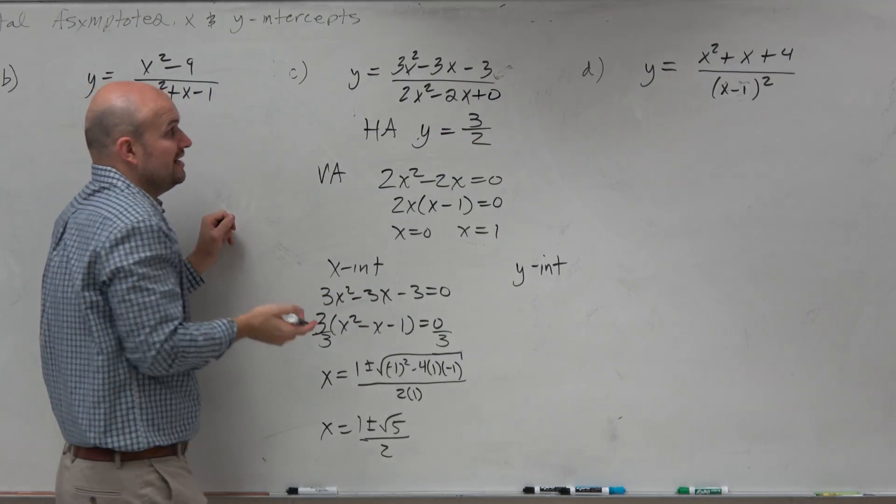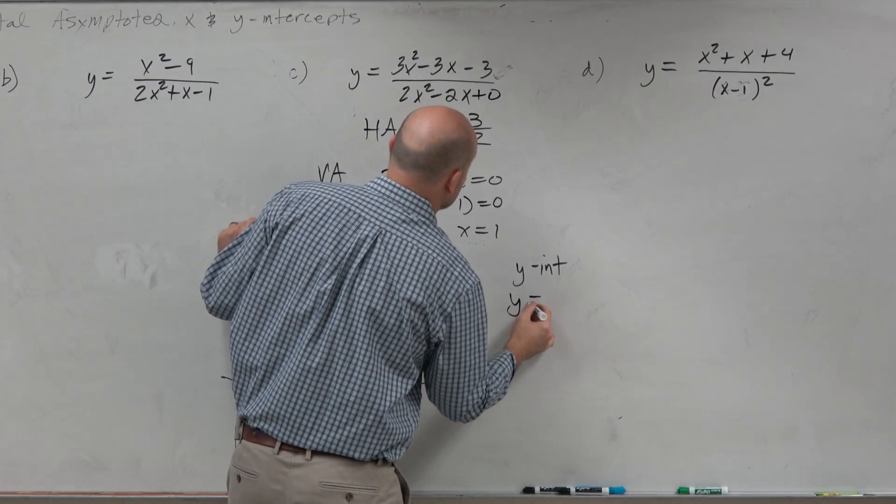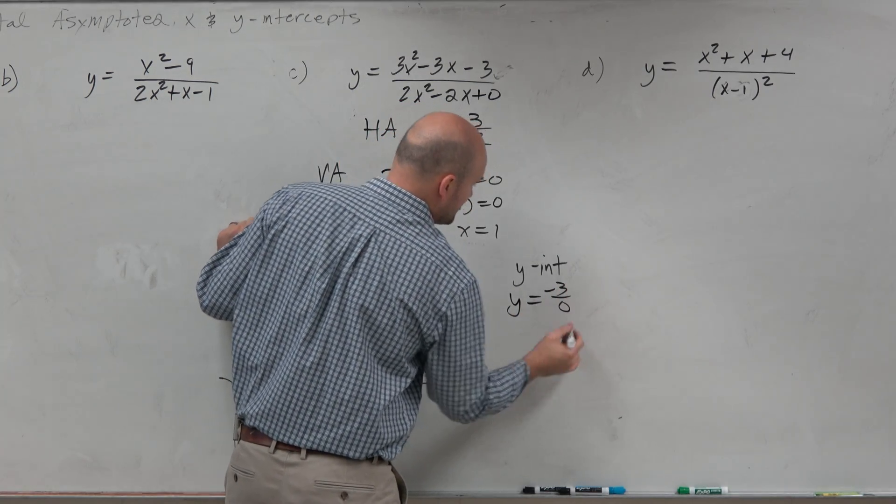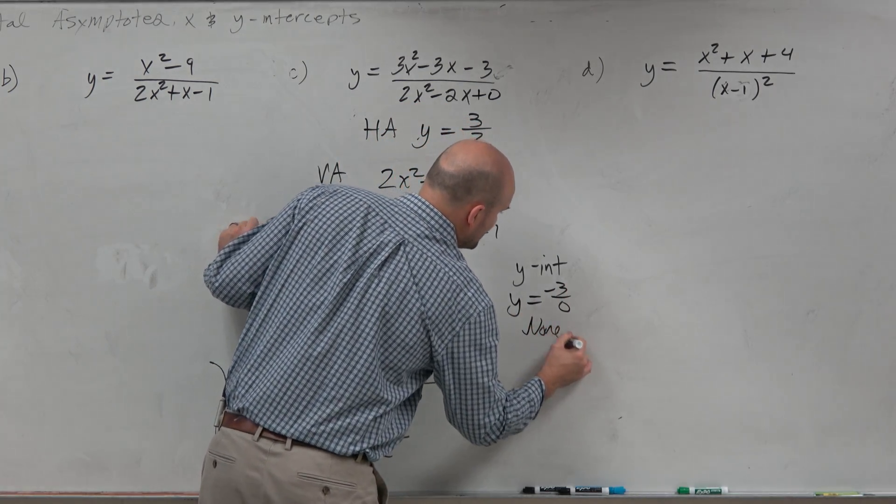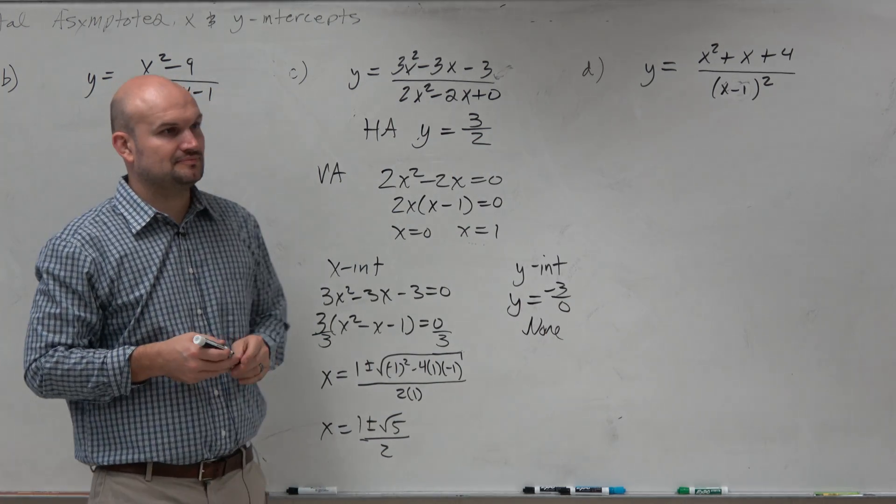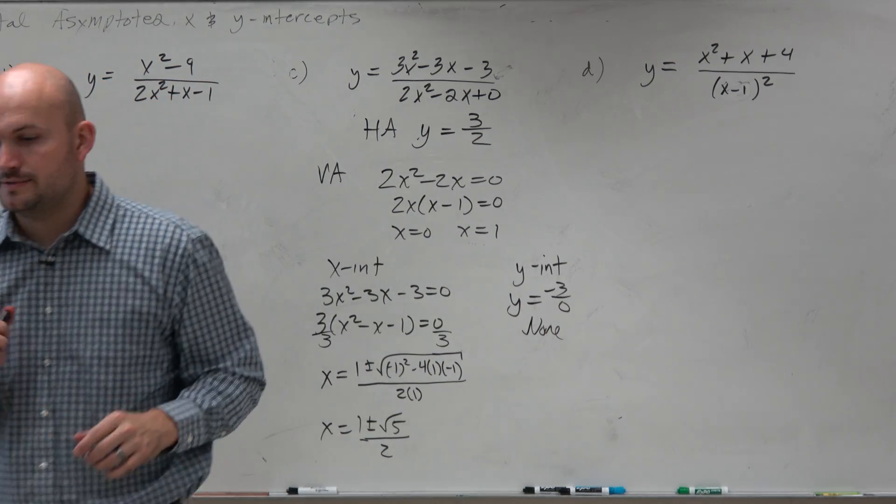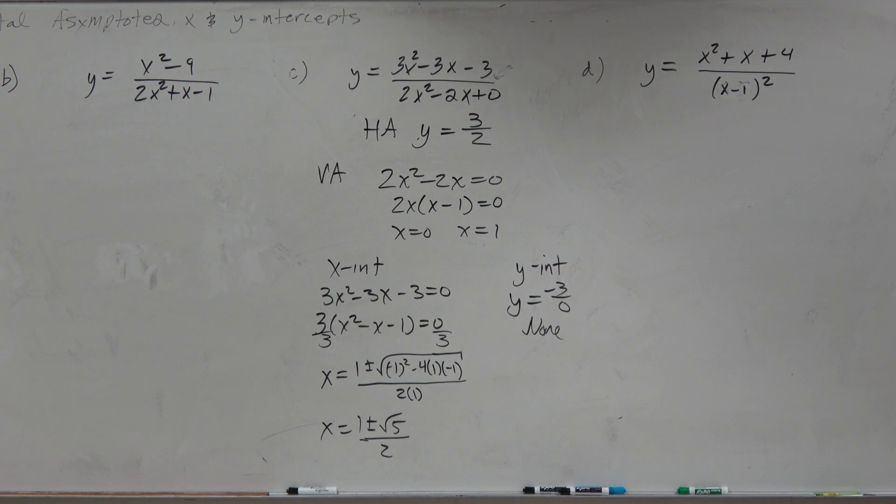I could write a 0 there, though. Right? So therefore, you'd see this is y is equal to negative 3 over 0, which means we do not have a y-intercept. All right? So let's go ahead and.